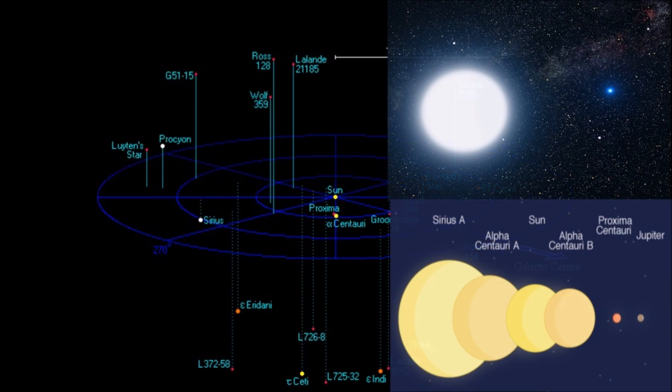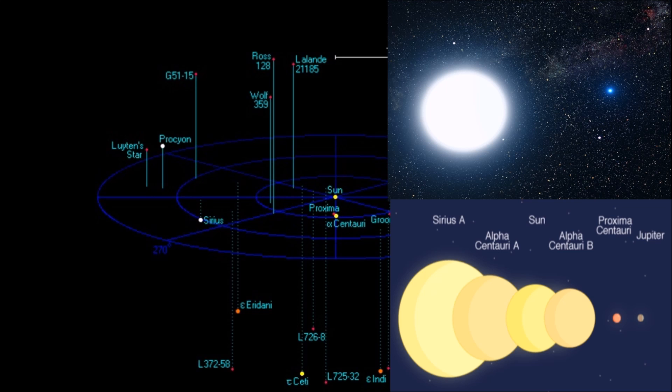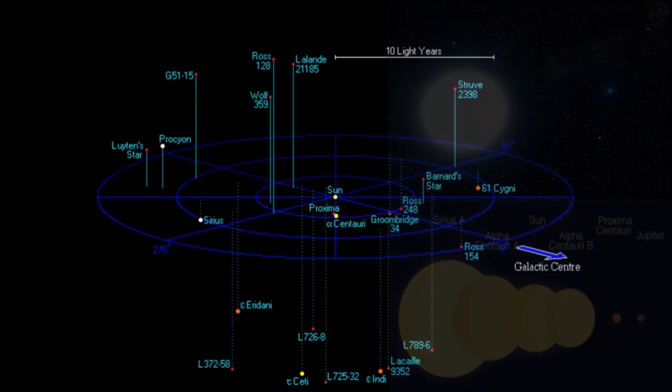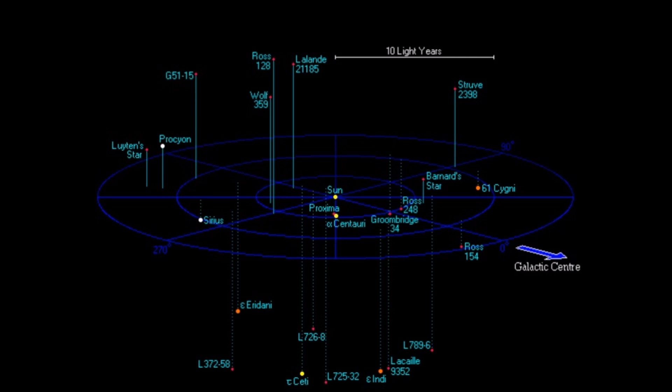The next main sequence star is Sirius A and B, 8.6 light years away, and Sirius B is a white dwarf star companion to Sirius A. Sirius A is the brightest star in the sky.